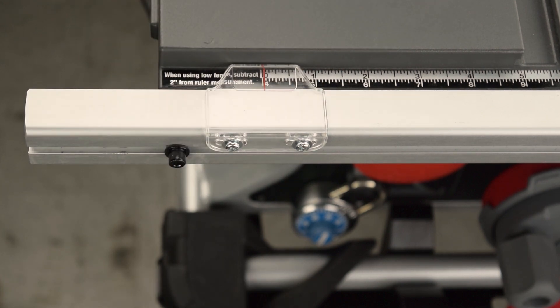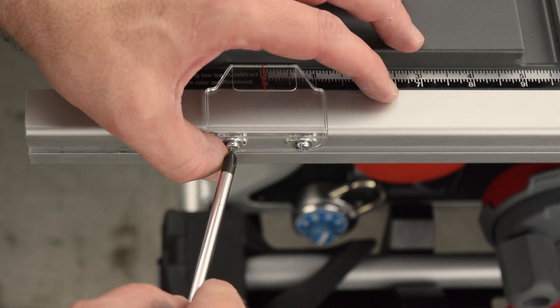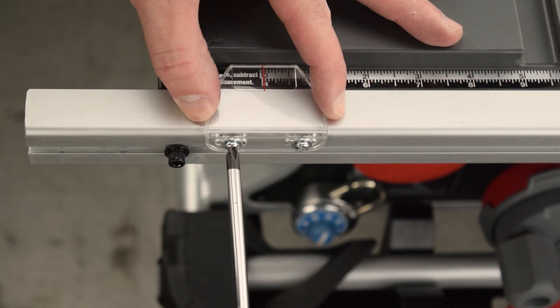If the indicator shifted while tightening, loosen the screws, shift, and then hold more securely while you tighten.